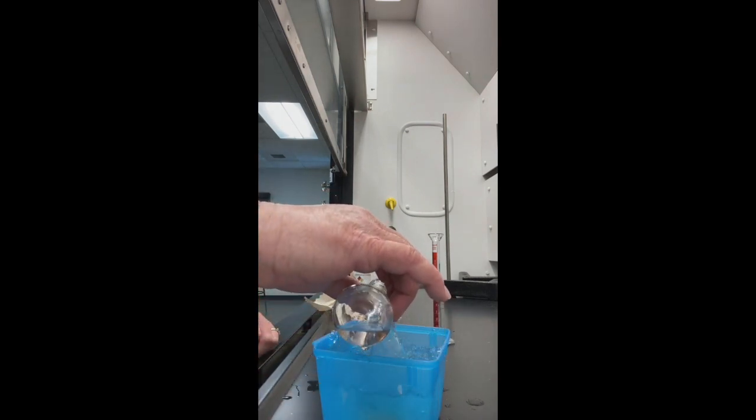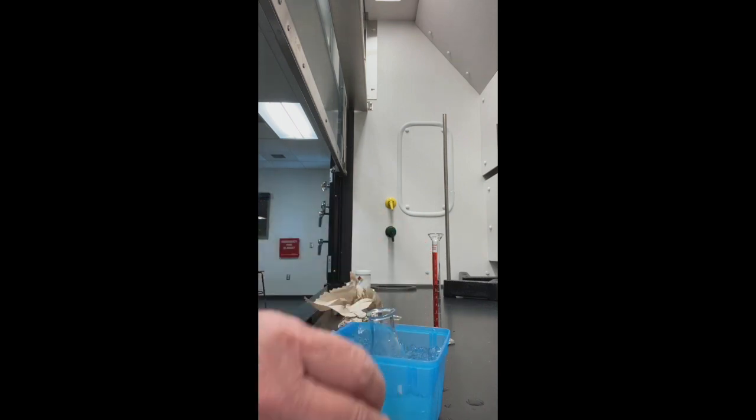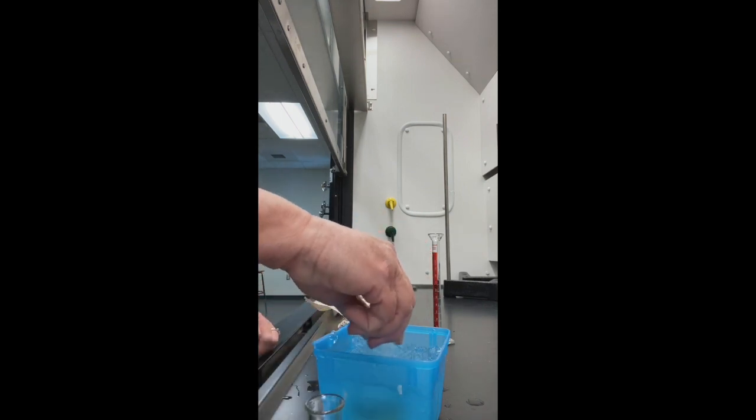I'm now adding my nitric acid and sulfuric acid dropwise. I'm keeping my flask inside the ice bath because it's heating up quite a bit. I'm going to add just a few drops at a time and swirl.